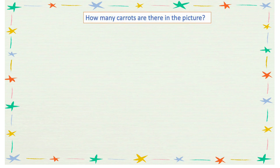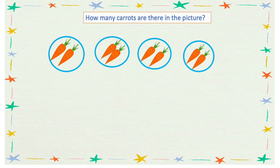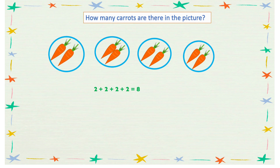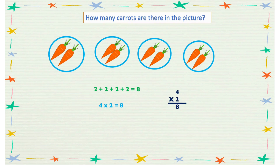Another example: how many carrots are there in the picture? We have 4 groups of carrots and in each group we have 2 carrots. So 2 plus 2 plus 2 plus 2 equals 8. In multiplication form we can do 4 times 2 equals 8. So we have 8 carrots all together.